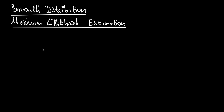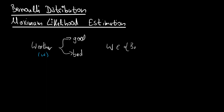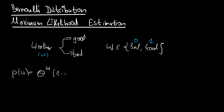So we are again talking about the Bernoulli distribution. Recall our simple example of the weather, which can be good and which can be bad. So the weather, shorthand w, is one of these two — it's bad or good. So it can be zero or one if you encode this. And this was our Bernoulli. The probability density distribution p of w was theta to the power of w times one minus theta to the power of one minus w.